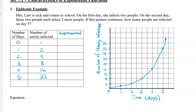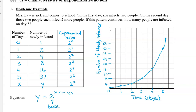So let's fill in the third column of this chart. Two is the same as two to the power of one. Four is two squared. Eight is two cubed, and so on. Therefore we can see that one is the same as two to the power of zero. So let's say that we have x number of days and y people newly affected. Then we can say the exponential form would be two to the power of x, the number of days. The equation we can write is y equals two to the power of x. Two is the base and x is the exponent.